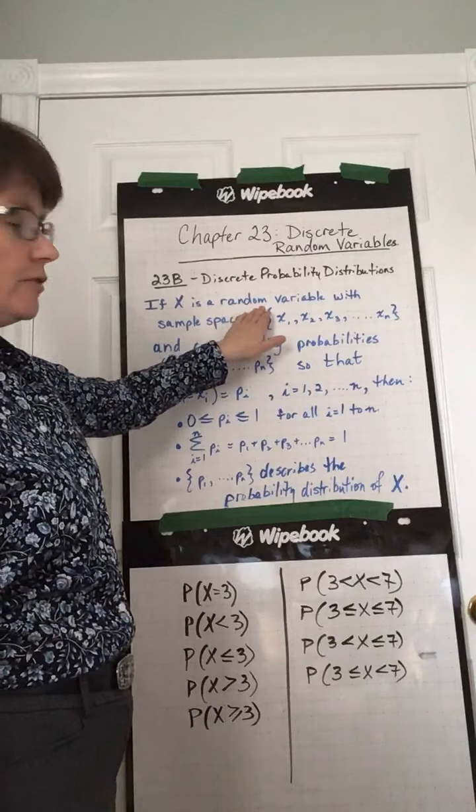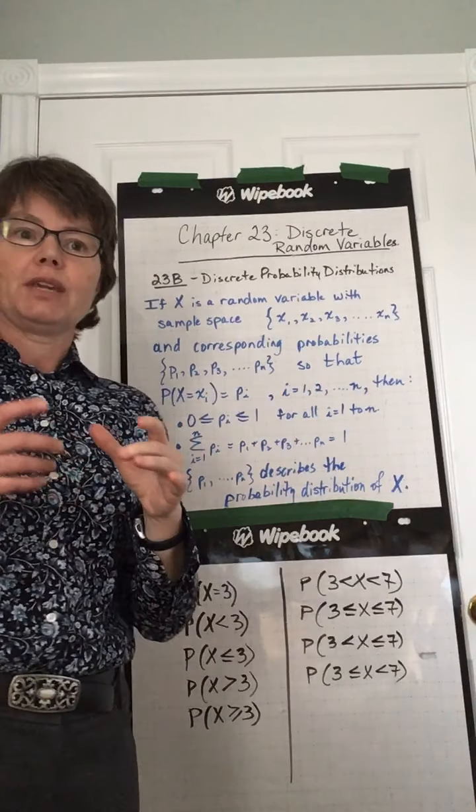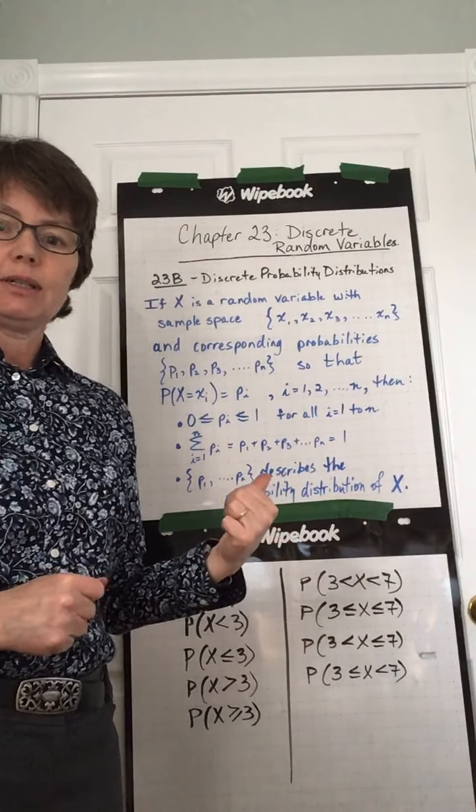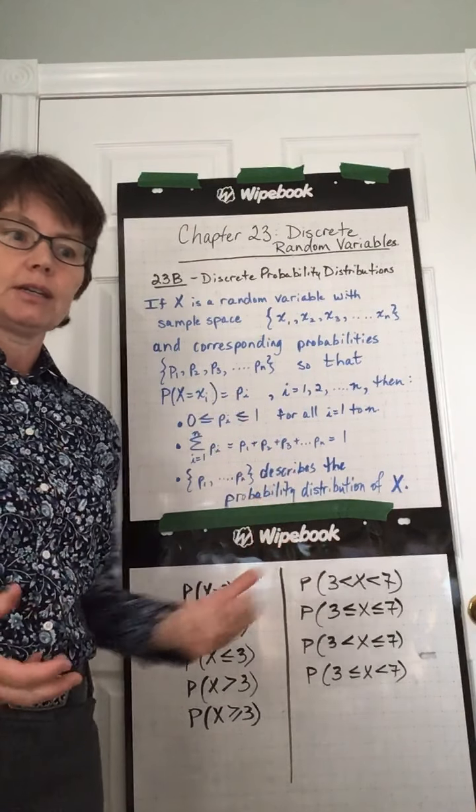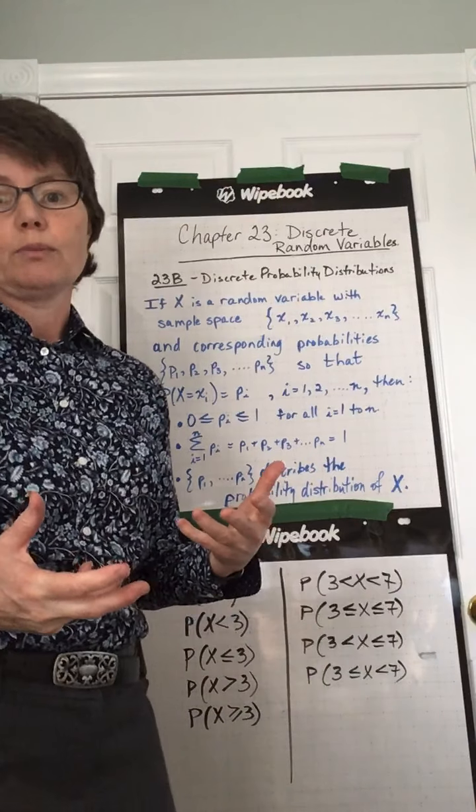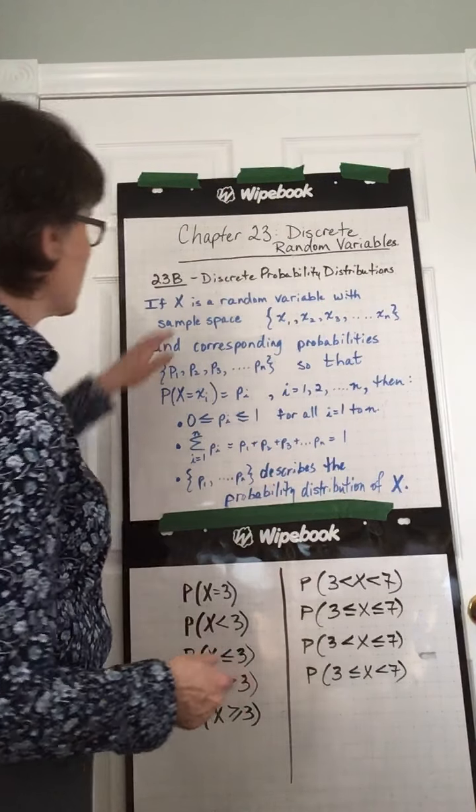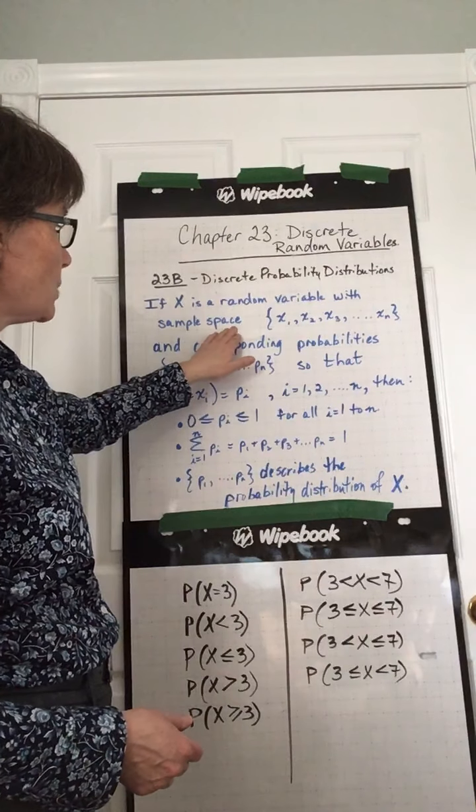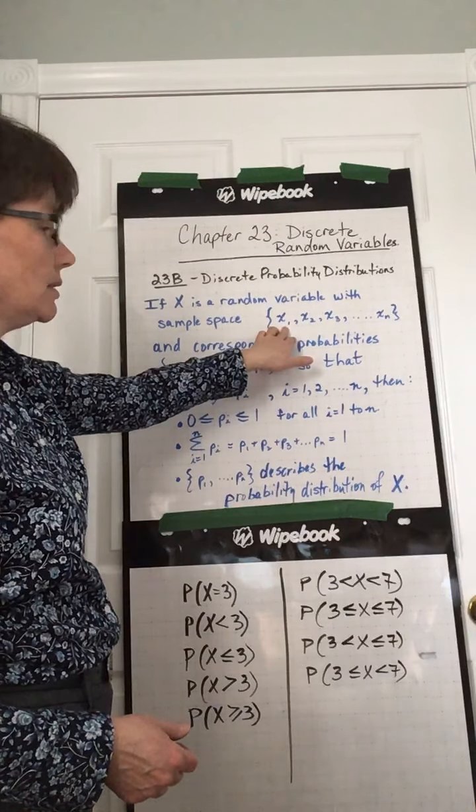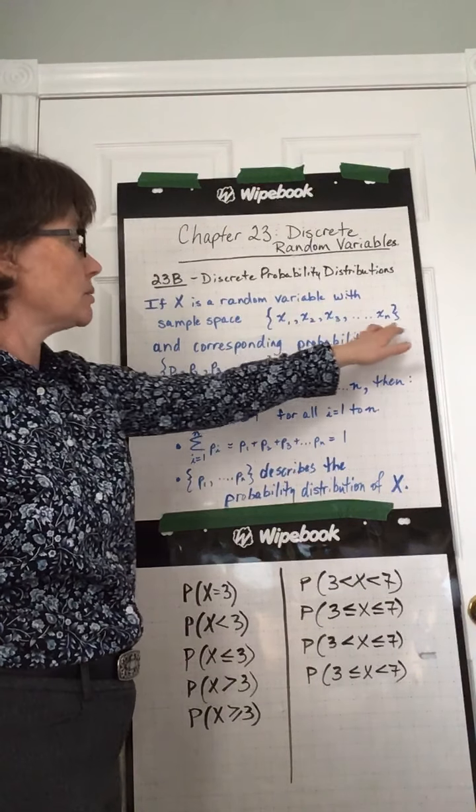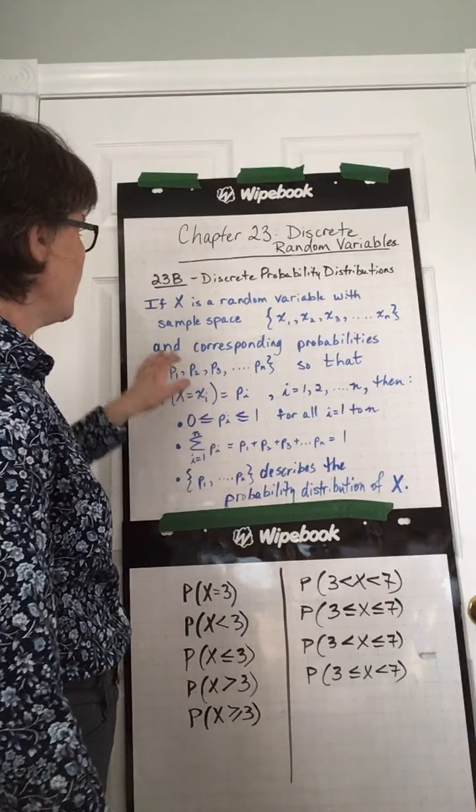If x is a random variable, that's keeping track of the number of things we're looking for. For example, in the previous video, we were looking at heads when tossing two coins. So if x is a random variable with sample space, this is the possible outcomes. Remember, sample space represents all the possible outcomes, so this is what could possibly happen.